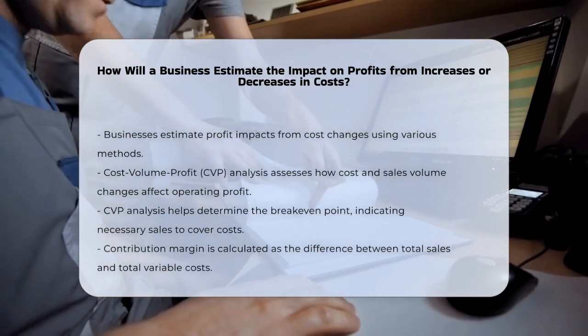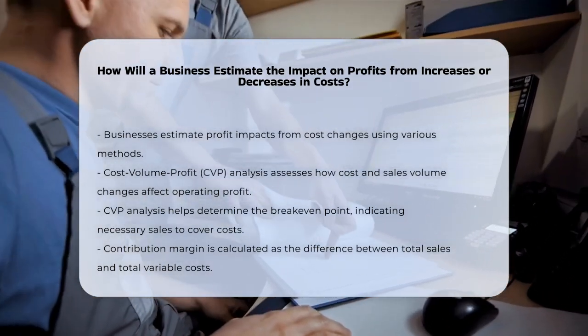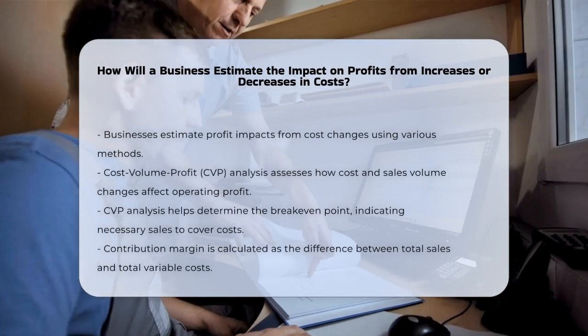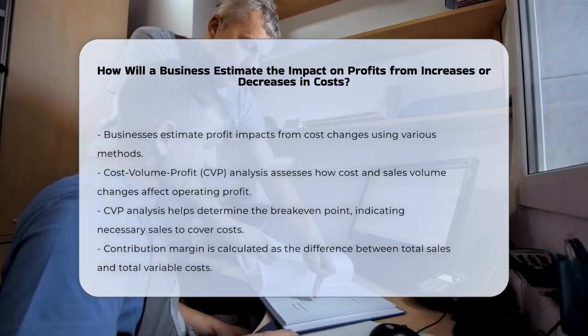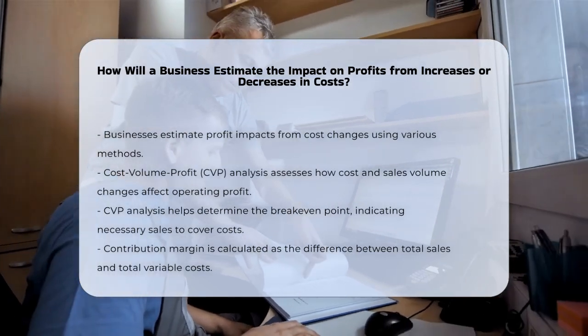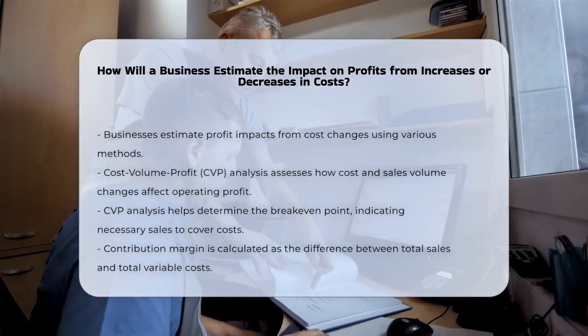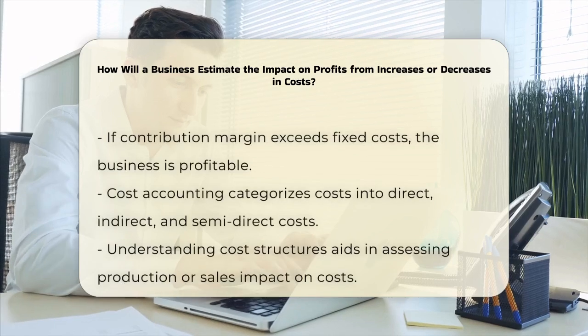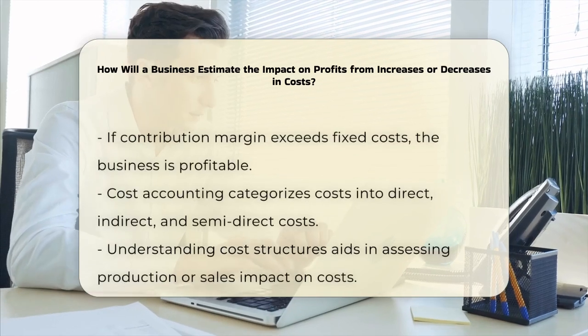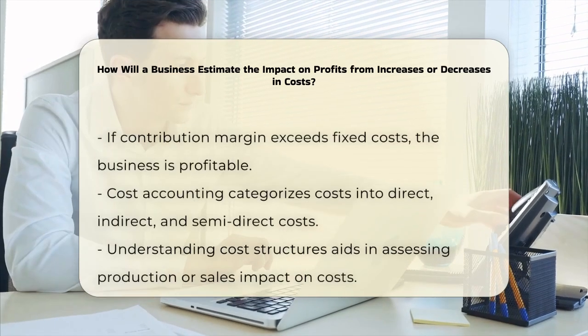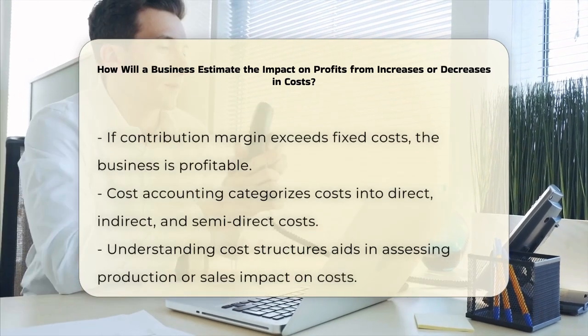CVP analysis also calculates the contribution margin, which is the difference between total sales and total variable costs. If your contribution margin exceeds your fixed costs, you're making a profit.